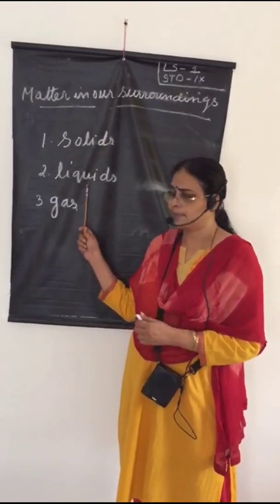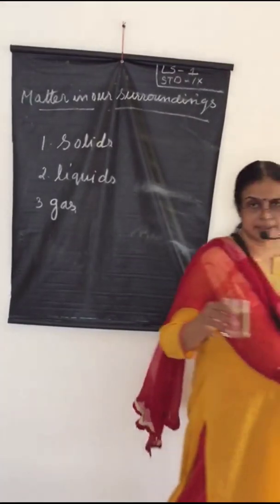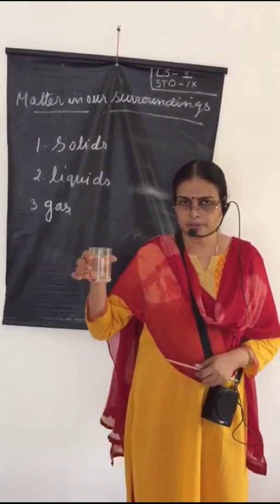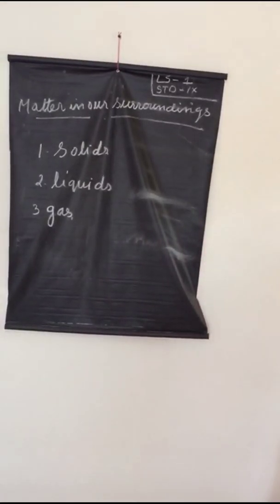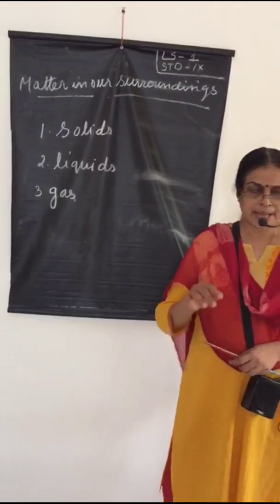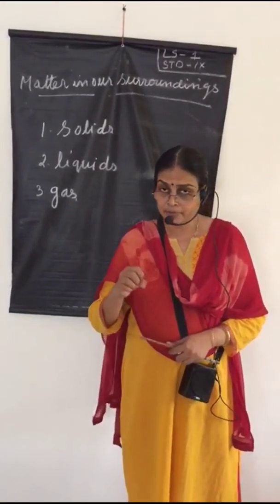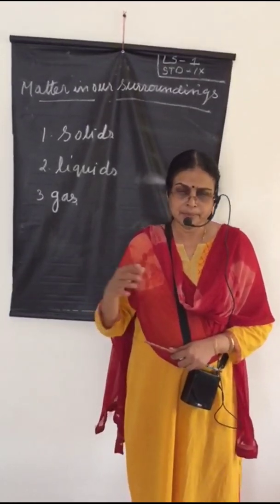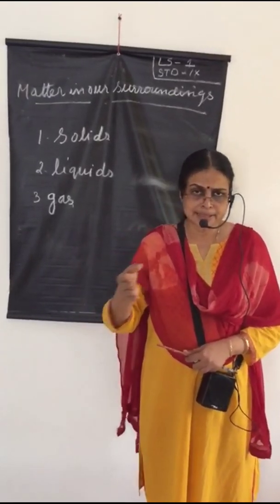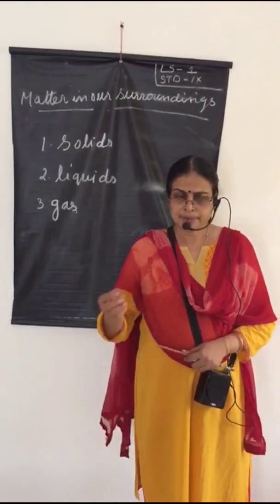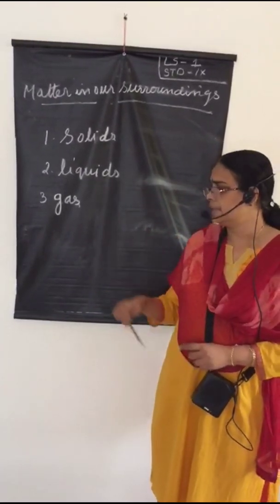Now let us discuss liquids. Liquids have no definite shape — they occupy the shape of their container. As you can see, the shape of water is the shape of the glass; if you take liquid in a mug, it takes the shape of that mug. So liquids have no definite shape but do have a particular volume. Liquids have fluidity — they can flow, and their particles move freely. Another property is diffusion: solids, liquids, and gases can diffuse in a liquid. Even aquatic organisms can breathe the gas dissolved in water.